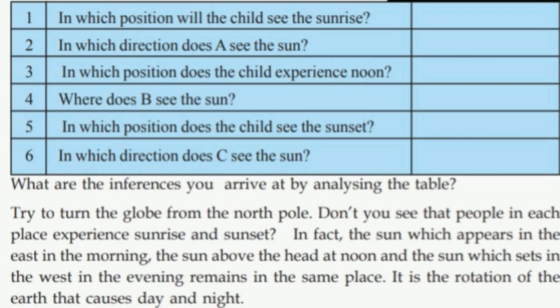The sun which rises in the east in the morning and sets in the west in the evening remains in the same place. It is the rotation of the earth that causes day and night.